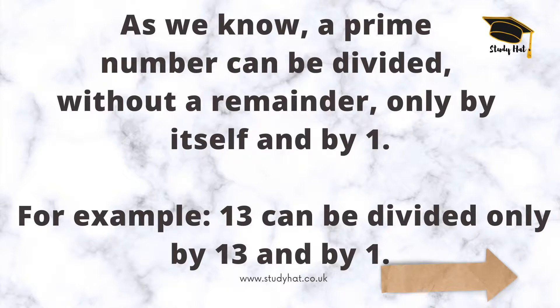So firstly let's remind ourselves what a prime number is. A prime number can be divided without a remainder only by itself and by one. To put it more simply, 13 can be divided by itself and by one.